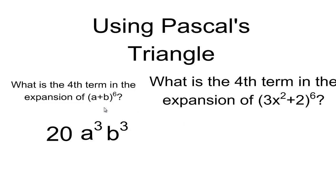So here I know that instead of a, I have 3x squared. And so instead of 20a cubed, I'm going to have 20 times 3x squared cubed, and instead of multiplying by b cubed, I'm multiplying by 2 cubed.